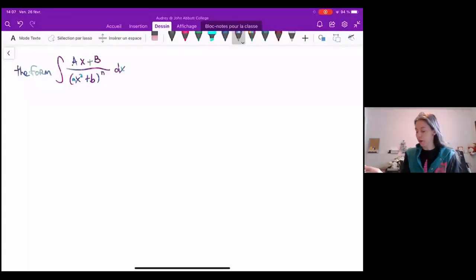Hi guys! Audrey here. So we're working on partial fractions still, and in the last video we saw this form ax plus b over ax squared plus b to the power of n. But what happened was this b right here ended up being zero, so we didn't really have to worry about what happened if it wasn't zero.